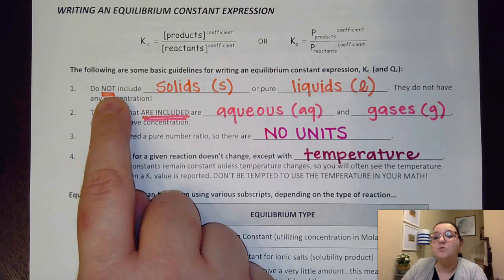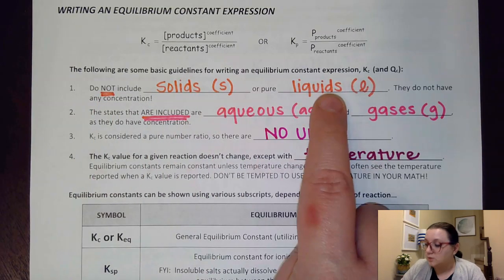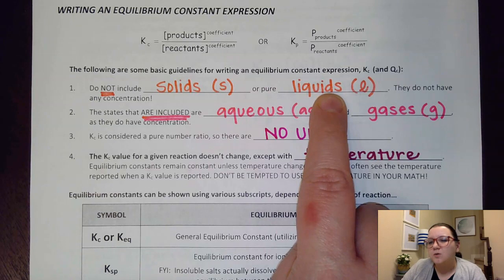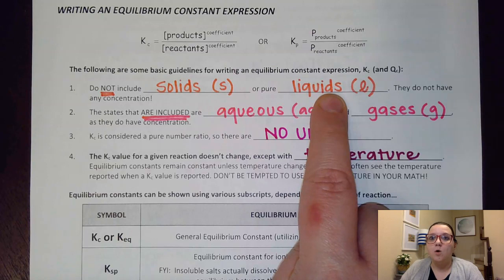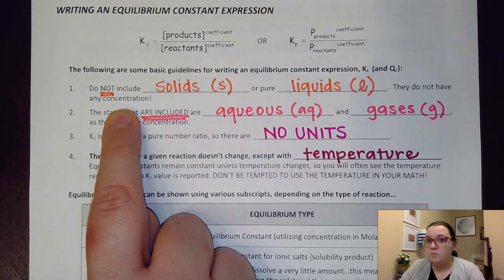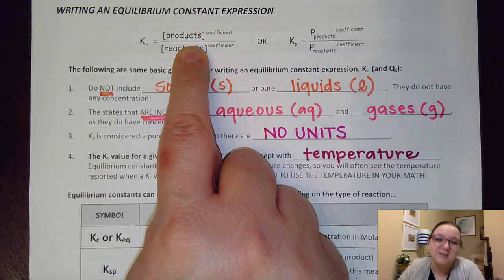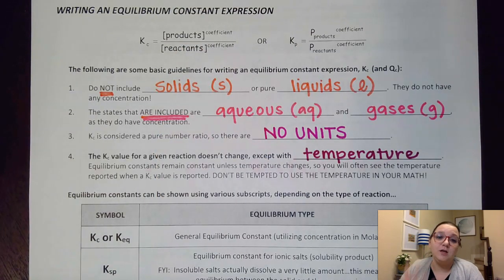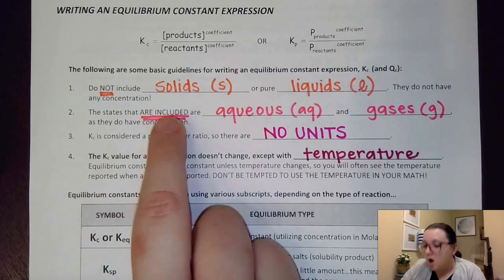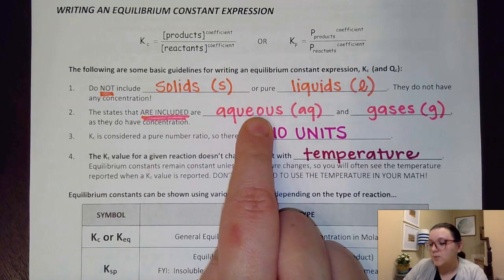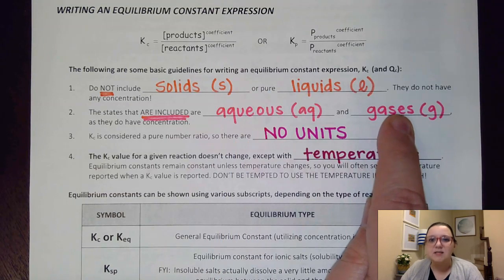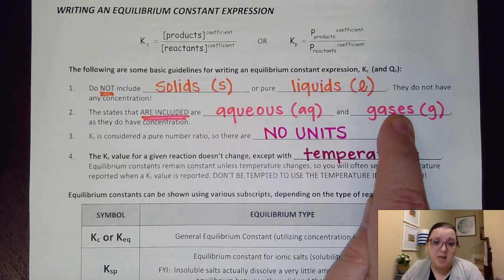So it says here that we do not include solids or pure liquids. Pure liquids would be things like water, or you could have liquid bromine or liquid mercury. The reason why we don't include these is they don't have concentrations. So the states that are included would be aqueous solutions, as well as gases. Gases technically do have a concentration because all gases are dissolved in air.